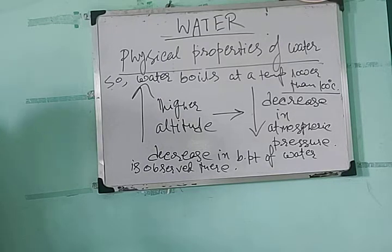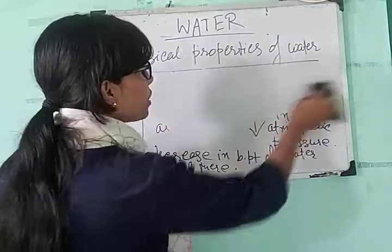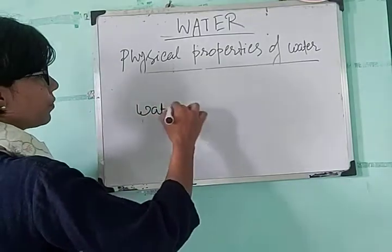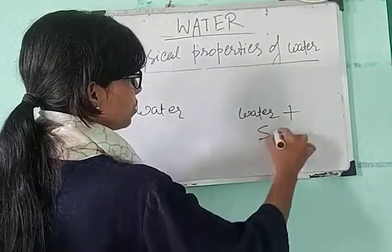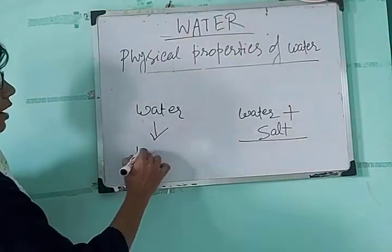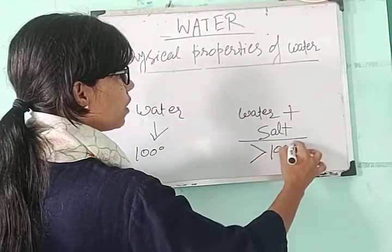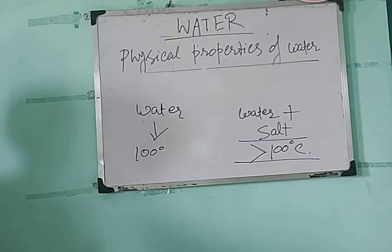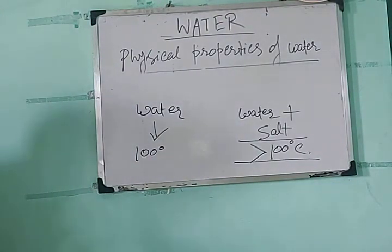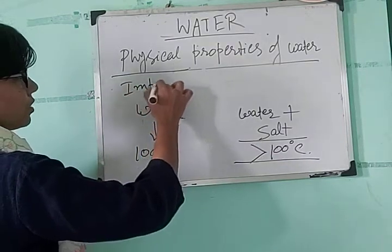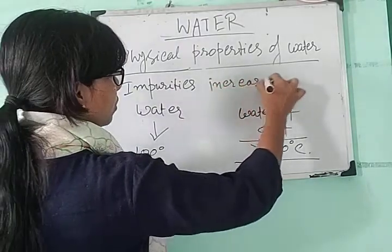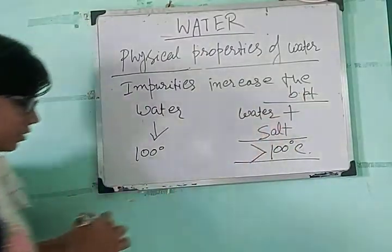The boiling point of water also depends on another factor — the presence of dissolved impurities. For example, if salt is added to normal water, pure water boils at 100 degree Celsius, whereas water with added salt boils at greater than 100 degree Celsius. So water with impurities will boil at a higher temperature than water without impurities. Added impurities increase the boiling point of water or any solvent.